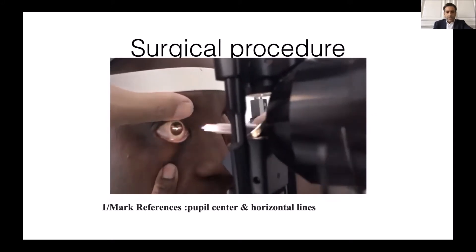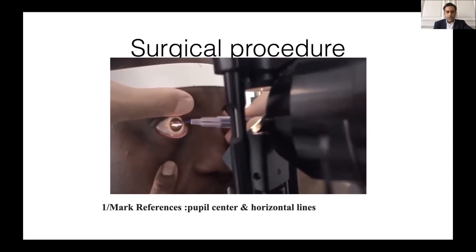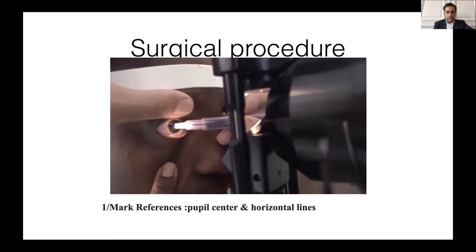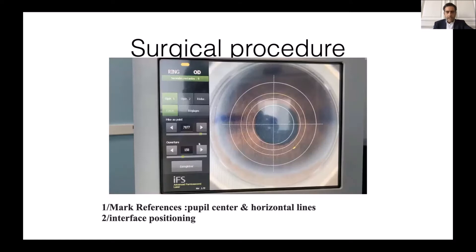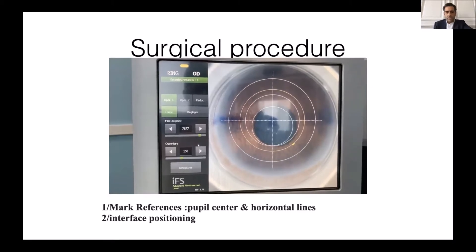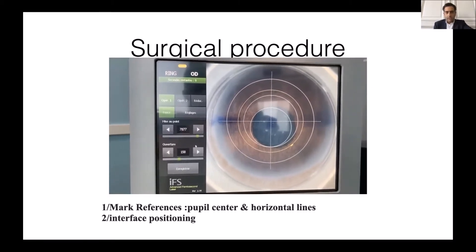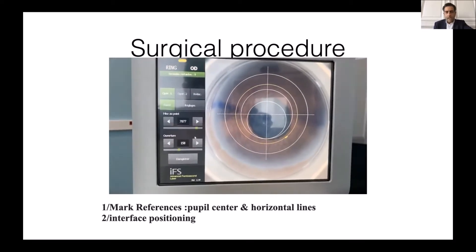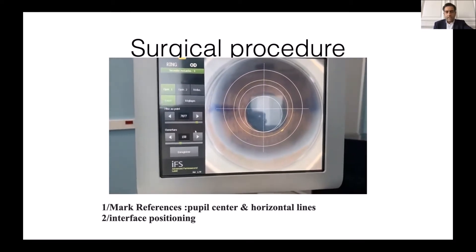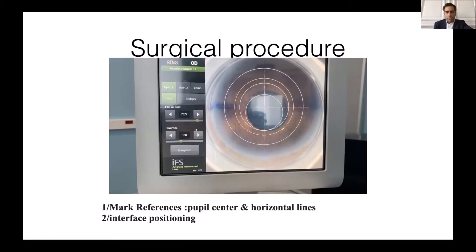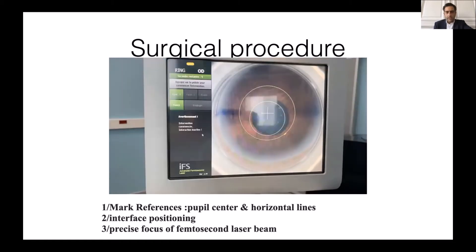I mark the horizontal lines at 0 and 180 degrees and the center of the pupil. Then, under the femtosecond laser, we are able to center our interface to have a good positioning. And if I need, I can rotate the eye to adjust the axis of the femtosecond laser beam.